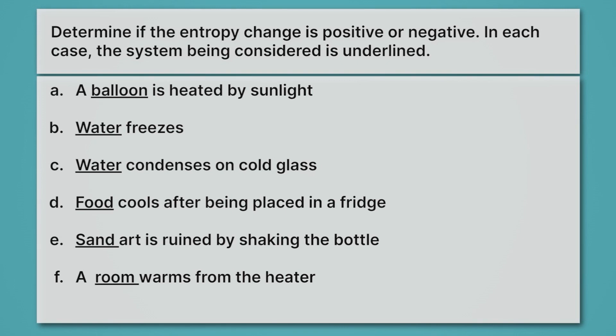So, for example, in A, it says a balloon is heated by sunlight. So we're thinking about that balloon. Does the balloon itself increase or decrease in entropy? Or in B, it says water freezes. So we're considering just the water. Pause the video and see if you can predict, in each of these cases, if the entropy change is positive or negative.